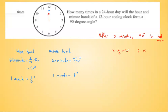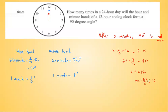Since the minute hand is ahead, if we add 90 degrees to the hour hand's position, that has to equal the minute hand's position. So the equation is: 6X minus X/2 equals 90, which gives 11X/2 equals 90, so 11X equals 180, and X equals 180/11. Dividing, that's 16 and 4/11 minutes — so after 16 and 4/11 minutes, the angle between the hour and minute hand is 90 degrees for the first time.